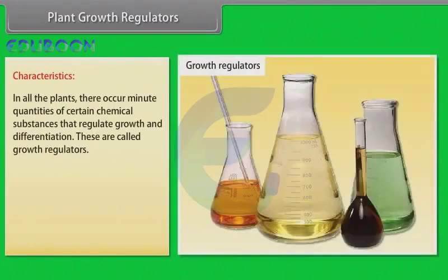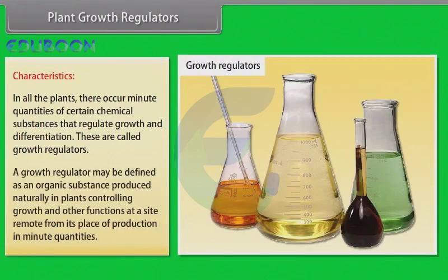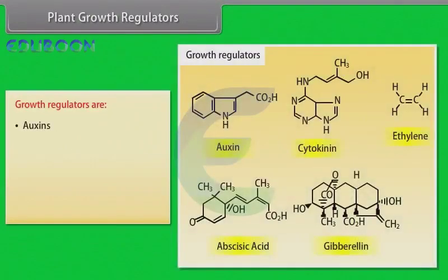In all plants, there occur minute quantities of certain chemical substances that regulate growth and differentiation. These are called growth regulators. A growth regulator may be defined as an organic substance produced naturally in plants, controlling growth and other functions at a site remote from its place of production, in minute quantities. These are auxins, gibberellins, cytokinins, ethylene and abscisic acid.